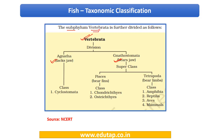Under Gnathostomata, there are two superclasses: Pisces and Tetrapoda. We are going to look at the superclass Pisces — fishes that bear fins. Under Pisces there are two classes: Chondrichthyes and Osteichthyes. We will also look at the class Cyclostomata because these are ectoparasites on fishes — they live outside the body of fishes.